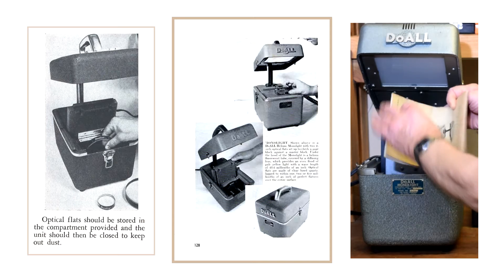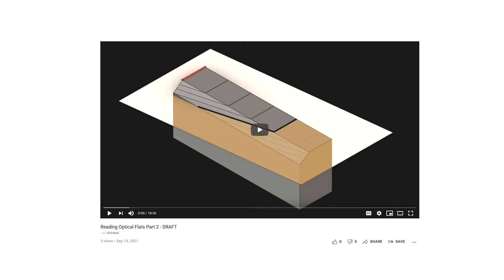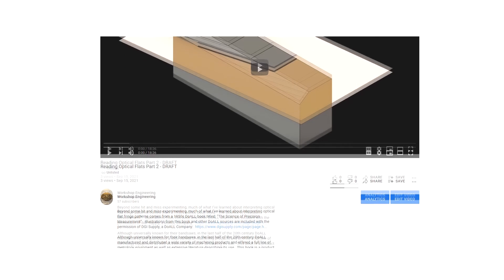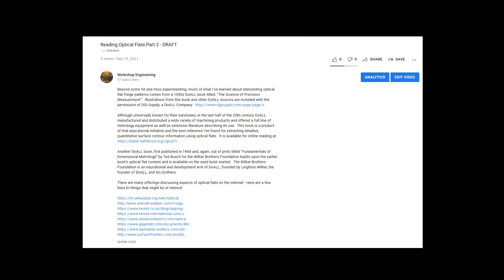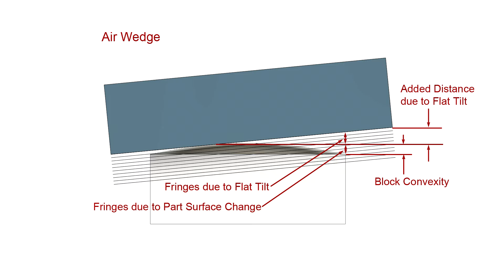I've recently acquired several editions of a later Duell book that builds on the earlier material, and references to the Duell books and a few other sources are included in the description under this video. We've seen examples of the air wedge formed when an optical flat is tilted, and suggested that it's useful, so let's look at it more carefully.